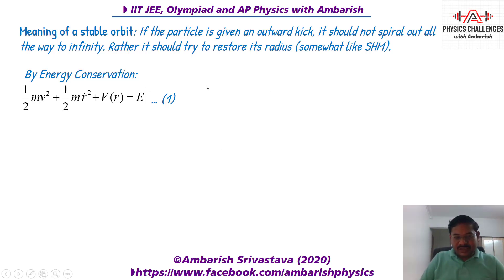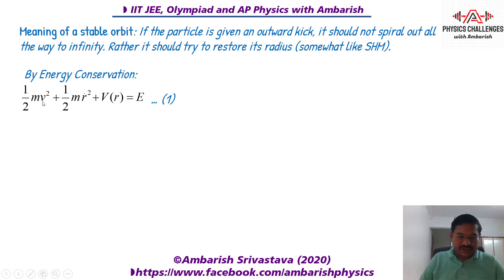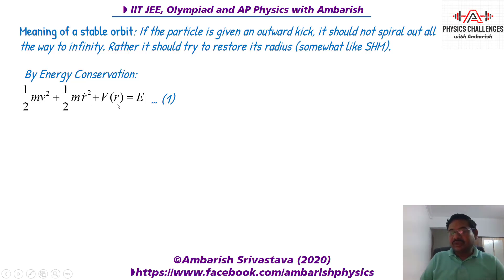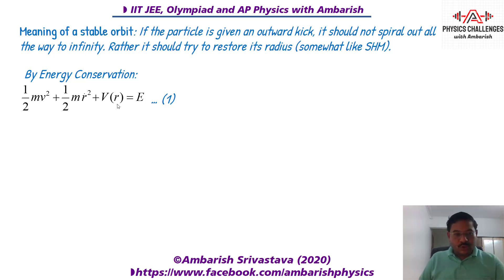Ready for the magic? We can write the energy conservation equation. If the particle is moving along a circle, there will be some tangential velocity, and if it's given an outward kick, there will be some radial velocity also. The energy is: half mv² (where v is the tangential velocity) plus half m·ṙ² (since r is the radial distance from the center, any radial motion contributes kinetic energy half m·ṙ²), plus some potential function V(r). Since we're given a central force of 1/rⁿ, we can convert it into a potential function — the conservative force is the negative derivative of the potential. The total kinetic energy plus potential energy equals total energy E, which is constant.